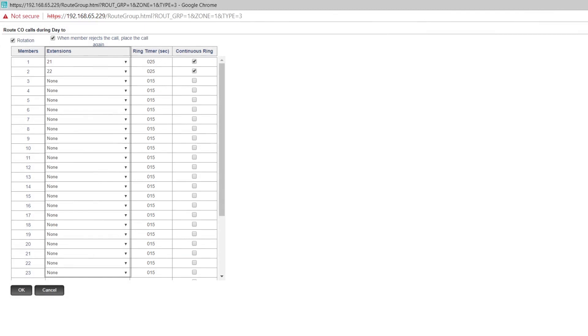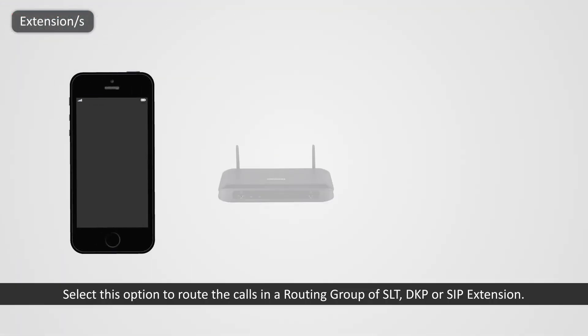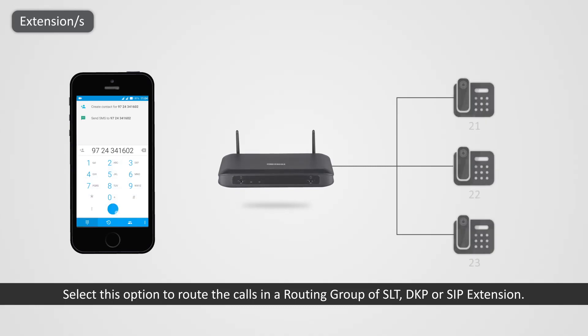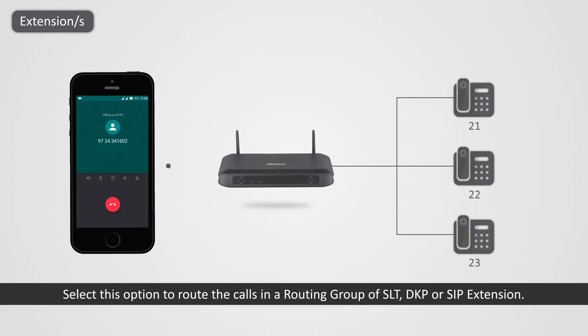The second option is Extensions. Select this option to route the calls in a routing group of SLT, DKP, or SIP extensions.